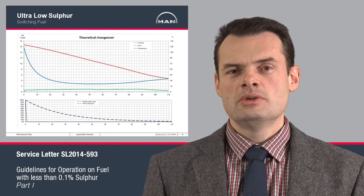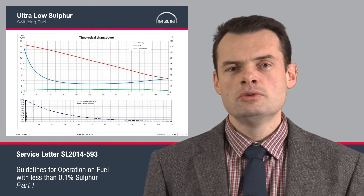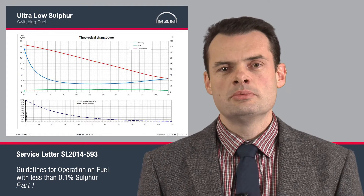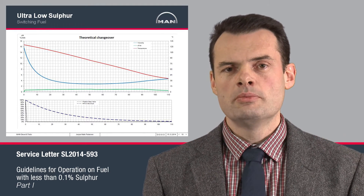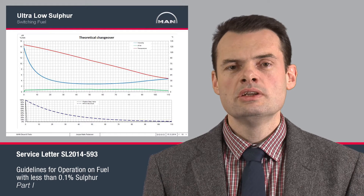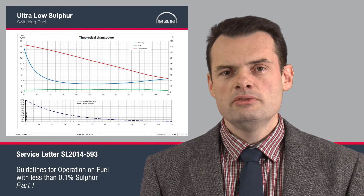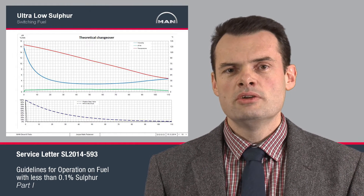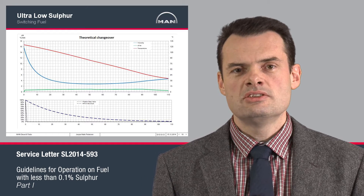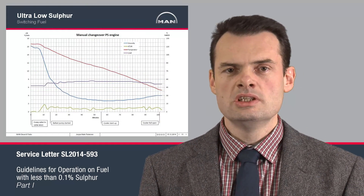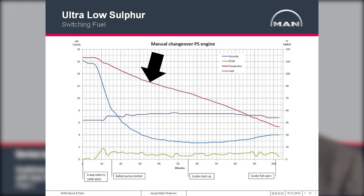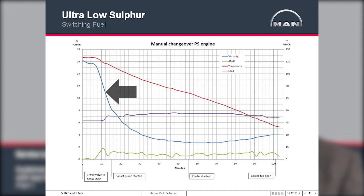A practical example is shown here from a switch from heavy fuel to distillates under steady operation. The engine was operating at 50% engine load and we switched the valve to distillates and followed the viscosity as the change happened. The temperature decreased by approximately one degree per minute, a little bit lower than our recommendation. We do allow two degrees per minute for change, but as you can see, with the given engine load, the viscosity dropped very rapidly.